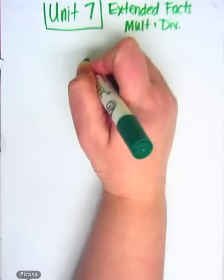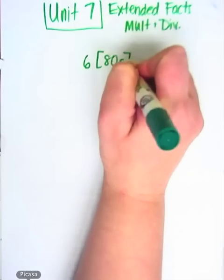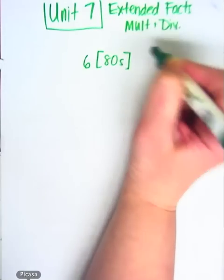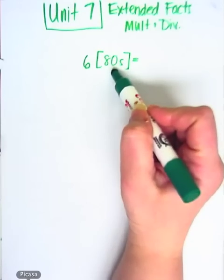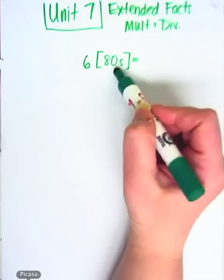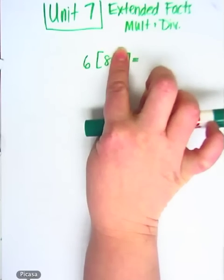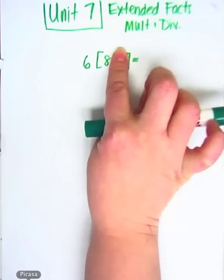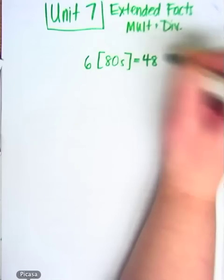So let's look at the problem of six eighties. Now, at first you might be a little overwhelmed because you say, hey, eighties, I don't know how to do six times eighty, but it's easy. All you have to do is cover the zero and look at it as six times eight. And since you guys are so smart, you know that six times eight is forty-eight.